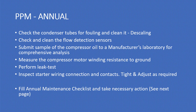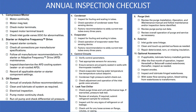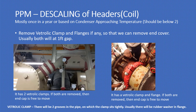For PPM annual: check the condenser tubes for fouling and clean or descale as required, check the clean flow detection sensor, submit a sample of compressor oil to the manufacturer's laboratory for comprehensive analysis, measure the compressor motor winding resistance to ground, perform tests, inspect starter wiring connections and contacts — tighten and adjust as required with certified personnel. Fill the annual maintenance checklist and take necessary action. The annual inspection checklist covers the compressor, starter, adaptive frequency drive, oil system, condenser, evaporator, control circuit, leak test, purge unit, exterior, and optional accessories.